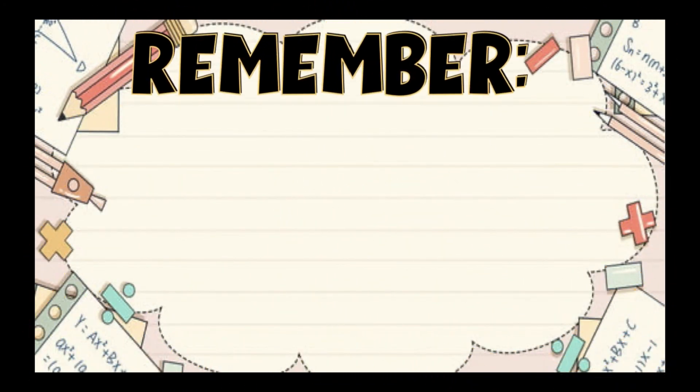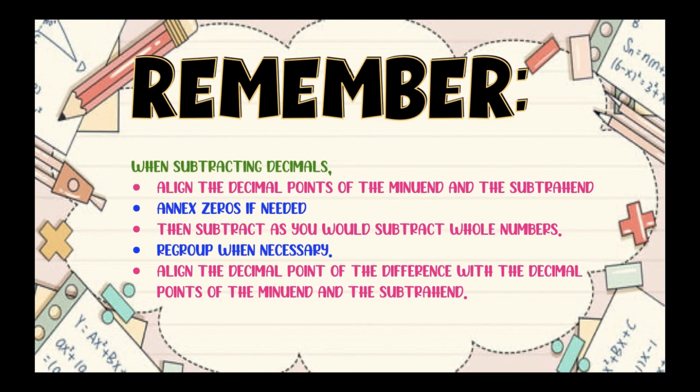Always remember, children: when subtracting decimals, the first thing that you need to do is to align the decimal points of the minuend and the subtrahend. Next, annex the zeros if needed. Then subtract as you would subtract whole numbers, starting from the rightmost digit. Regroup when necessary. And lastly, align the decimal point of the difference with the decimal points of the minuend and the subtrahend.